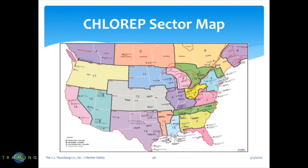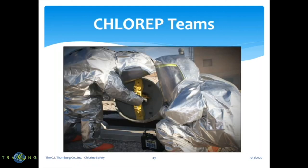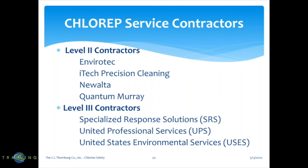This is their sector map. West Virginia is sector seven. The response teams in the West Virginia area would probably come out of Ohio, depending on where you're located. This is how they look when they show up — they're highly trained specifically for chlorine incidents. They'll show up with their moon suits and SCBAs and they're going to take care of the problem. They consist of level two and level three contractors.